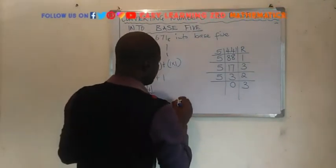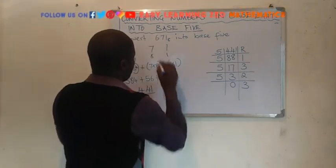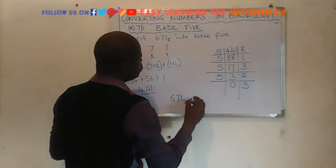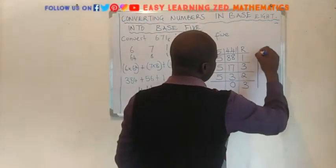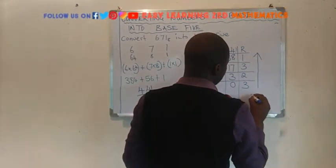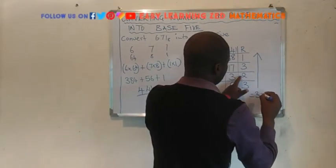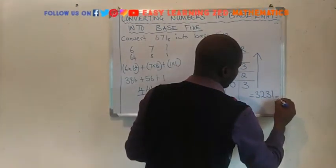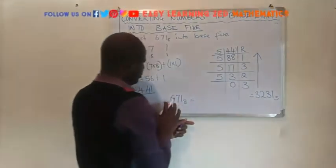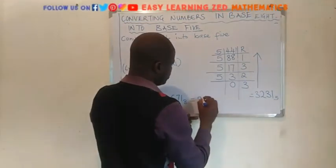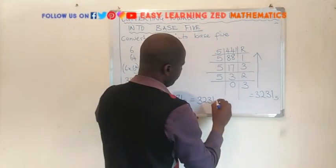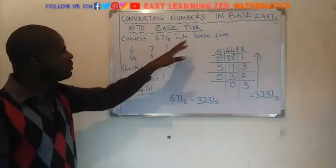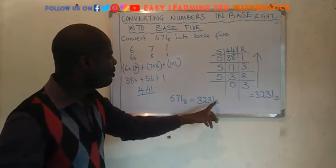Therefore we can say: 671 base 8 is equal to — reading the remainders from bottom to top — 3, 2, 3, 1, base 5. So converting 671 base 8 into base 5 will give us 3231 base 5.